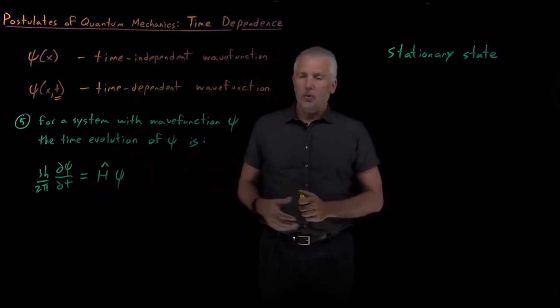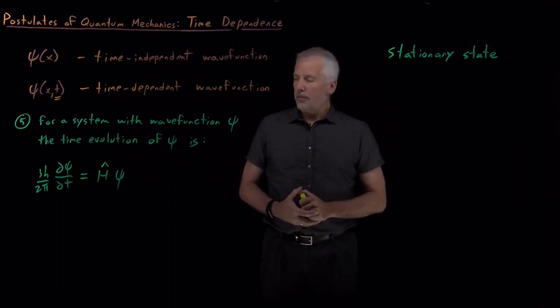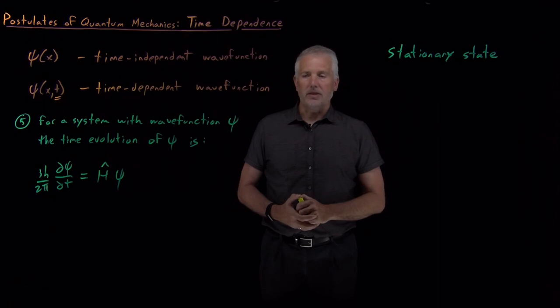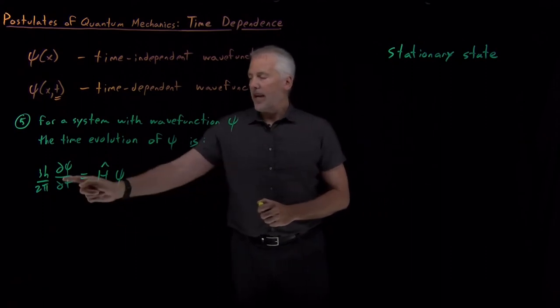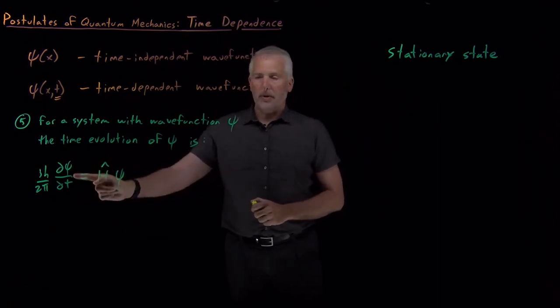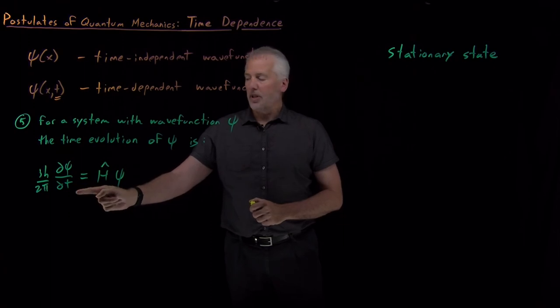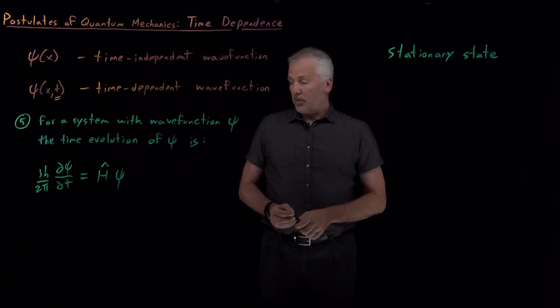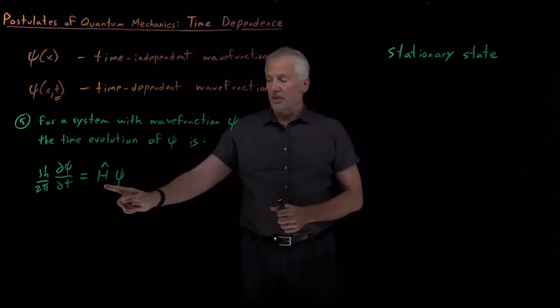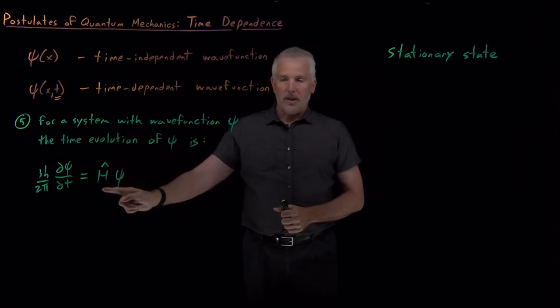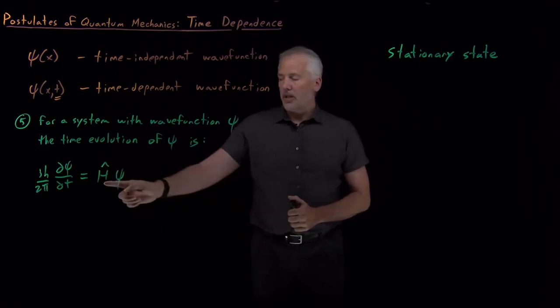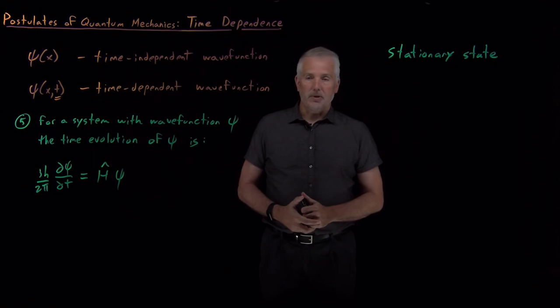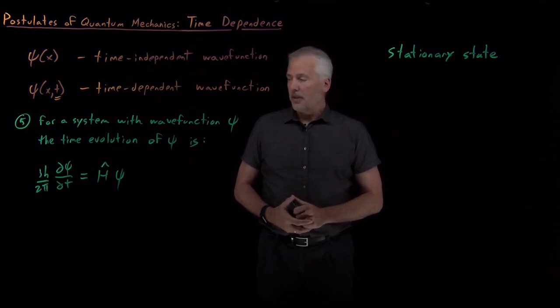So, this is the equivalent statement in quantum mechanics as Newton's laws of motion, for example, would be in classical mechanics. It tells us how the state of the system described by the wave function is changing as time goes on, and it gives a prescription for how to calculate that. What's a little bit remarkable, if you think about it, is the same equation that predicts the time evolution of the system depends on the same operator as the operator that tells us something about the energy of the system. So, that's a pretty remarkable fact.